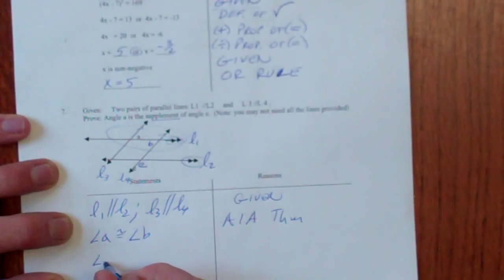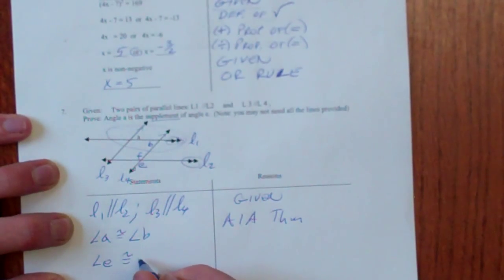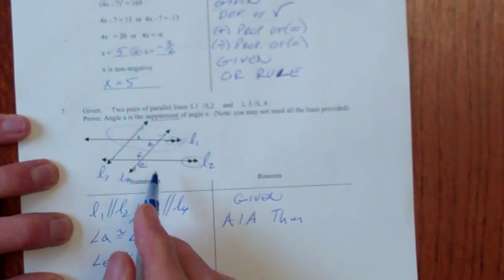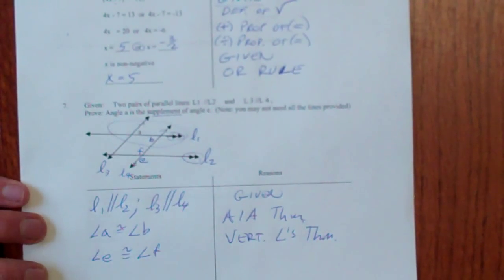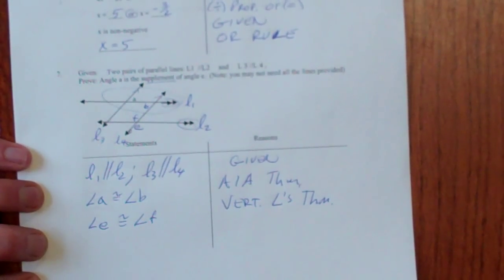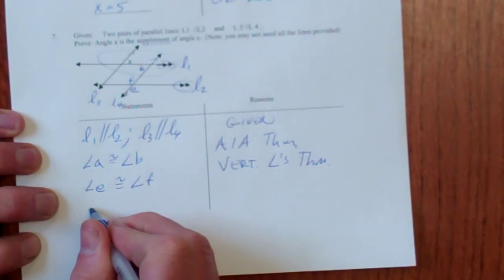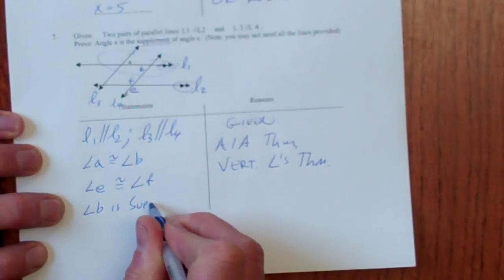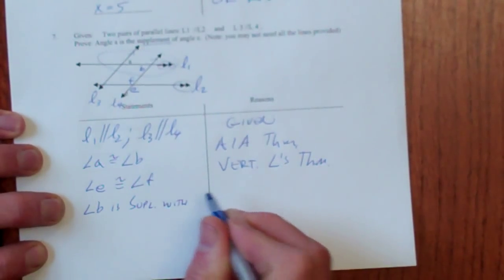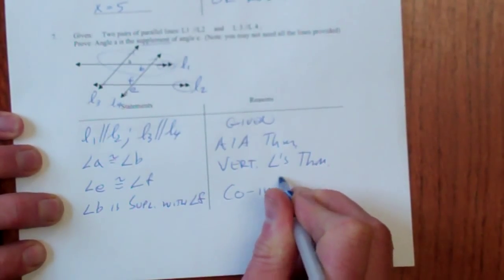And then I'm going to say angle E is congruent. I'll call that angle F, angle F to angle F. And that's because they're vertical angles. There are many ways to do this proof. So if yours is not exactly the same as mine, it's not probably a bad thing. But I can check it out if you bring by.